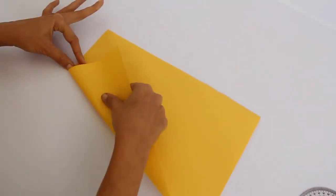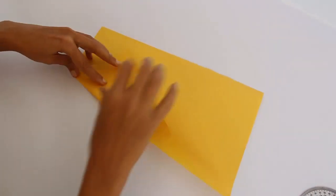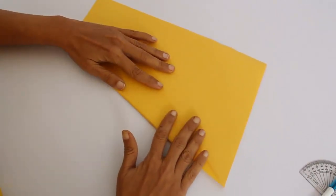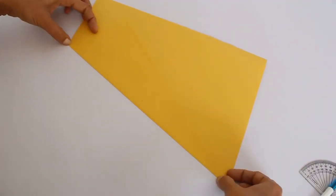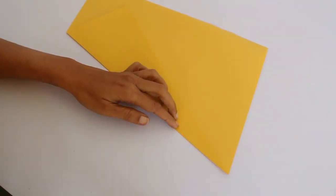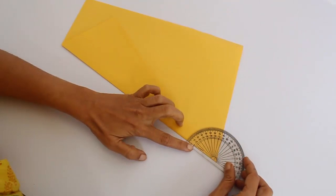When we first fold the paper in half, the rectangle formed is 10.5 by 30 centimeter. And so the angle made by this diagonal is 19.5 or approximately 20 degrees, which is tan inverse of 10.5 by 30.